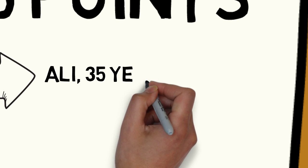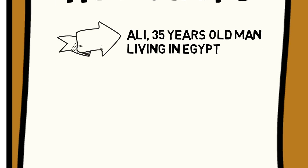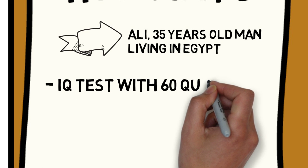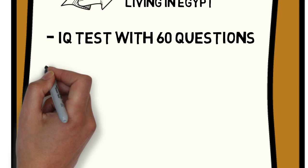Now let's go back to Ali. Ali is a 35 years old man living in Egypt. Let's say he wrote an IQ test with 60 questions.